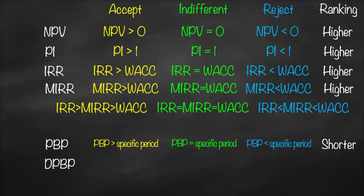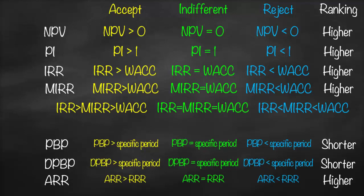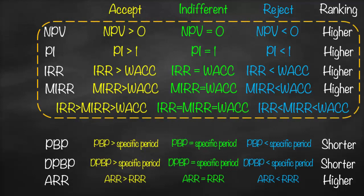Discounted Payback Period works the same way — I compare it against a specific period, which is subjective and differs from one investor to another. Accept if discounted payback period is greater than the specific period, indifferent if equal, and reject if lower. For mutually exclusive projects, the shorter is better. Then we have Accounting Rate of Return (ARR), also a subjective measure, since the required rate of return differs from investor to investor. Accept if ARR is greater than the required rate of return, indifferent if equal, reject if lower, and the higher the ARR the better.